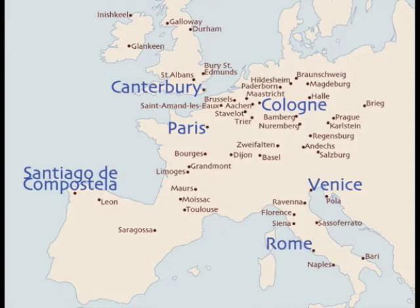Romanesque church architecture is influenced by two things: the growth of monasteries and the popularity of pilgrimages. Pilgrimage churches were situated along major pilgrimage routes that led to holy sites such as Canterbury, Rome, and Jerusalem. Another popular route wound its way through France and ended at the Cathedral of Santiago de Compostela in northwest Spain. Our typical plan is based on churches on this route.